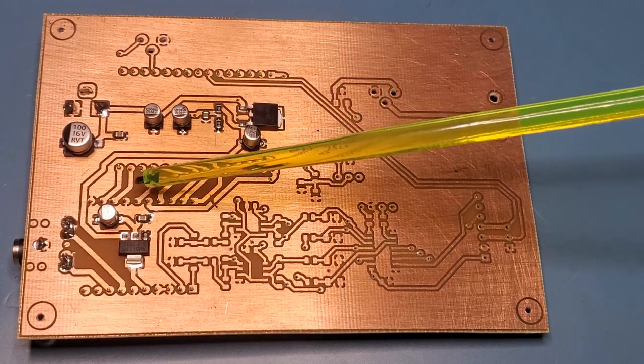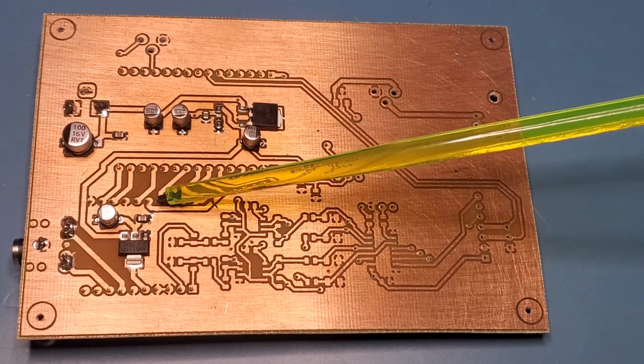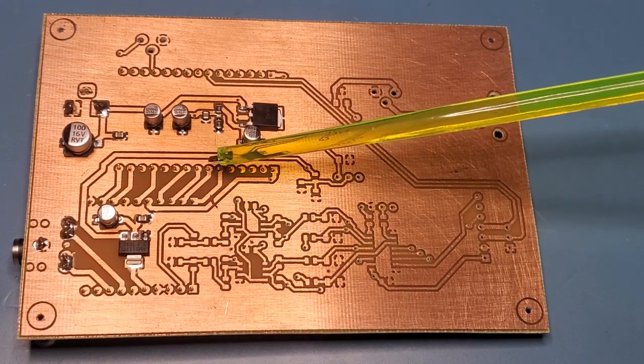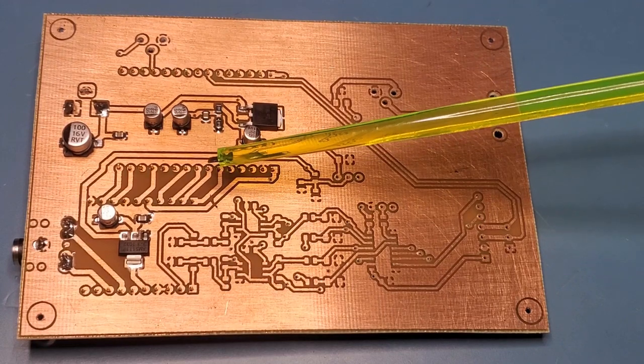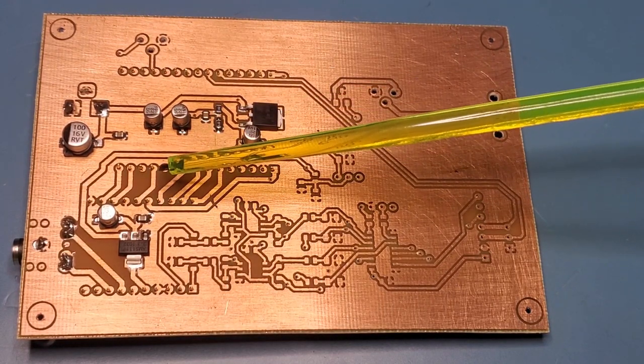So here's those short I2S leads that I mentioned. This is where the ES8388 board goes on the reverse side. And then here's those I2S lines here, the M-clock, S-clock, L-R-clock, and so on and so forth. As well as the digital in and digital out.